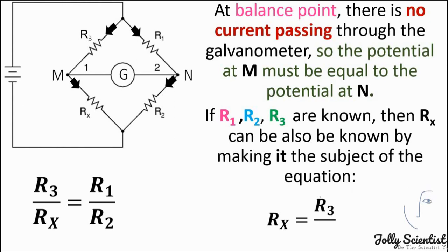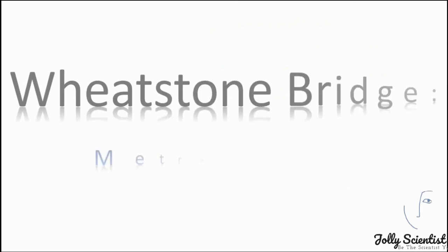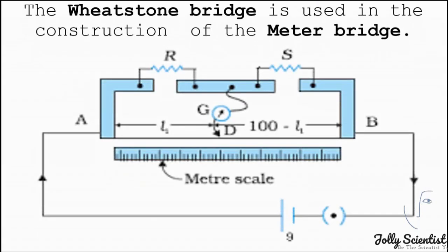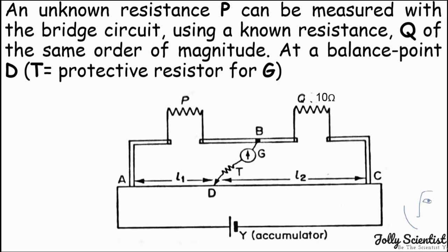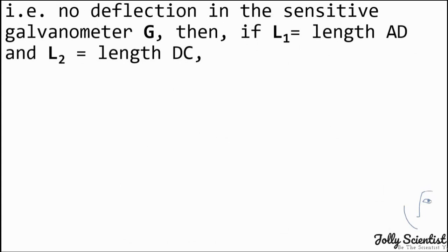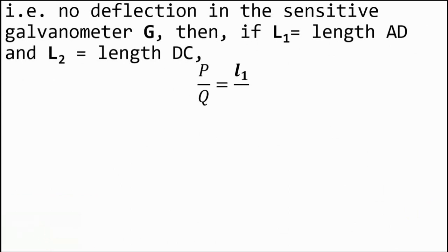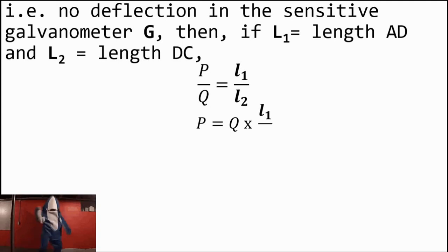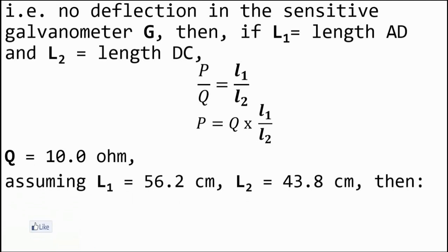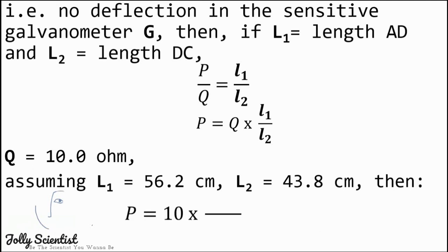If R1, R2, and R3 are known, then Rx can be found: Rx equals R3 multiplied by R2 divided by R1. The Wheatstone bridge is used in the construction of the meter bridge. An unknown resistance P can be measured using a known resistance Q of the same order of magnitude. At the balance point D, if L1 is the length AD and L2 is the length DC, then P divided by Q equals L1 divided by L2. For example, if Q is 10Ω, L1 is 56.2 cm, and L2 is 43.8 cm, then P equals 12.8Ω.